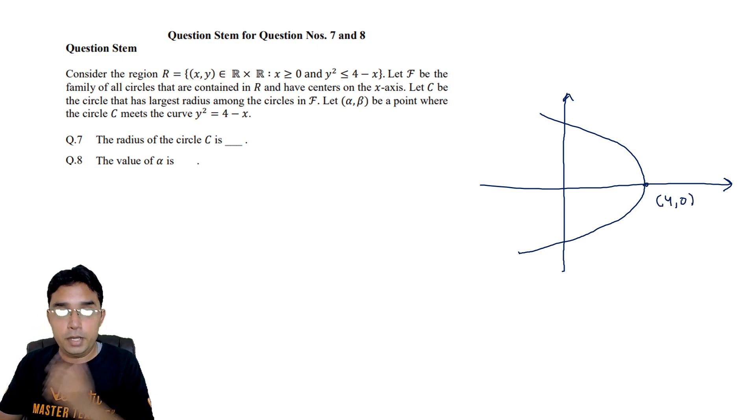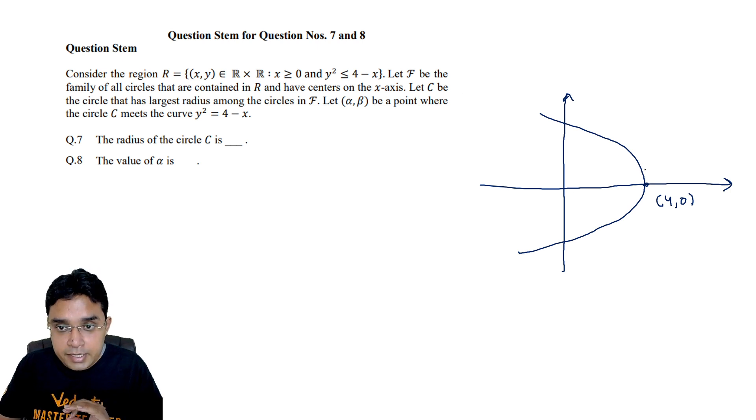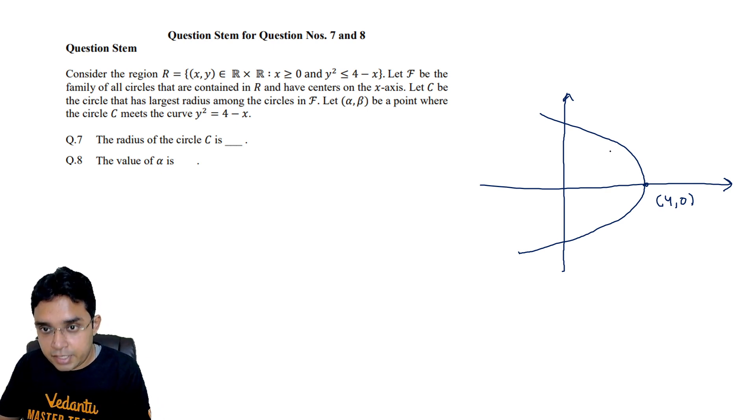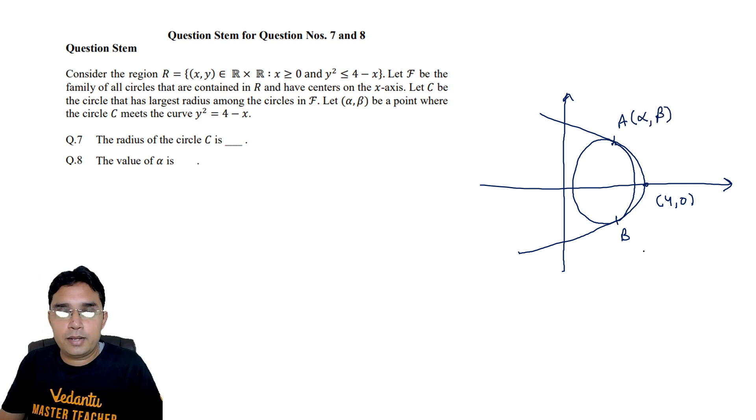Now they are saying f is the family of circle that are contained in this region r, and c is the circle having largest radius. So the circle having largest radius should be something like this, touching this parabola at two points, one above x axis, one below x axis. And they should be having same x coordinate. And they have called either of these points as (alpha, beta). Now there is a possibility that this circle may touch y axis also. Let us start solving then we will conclude it should touch or it should not touch.